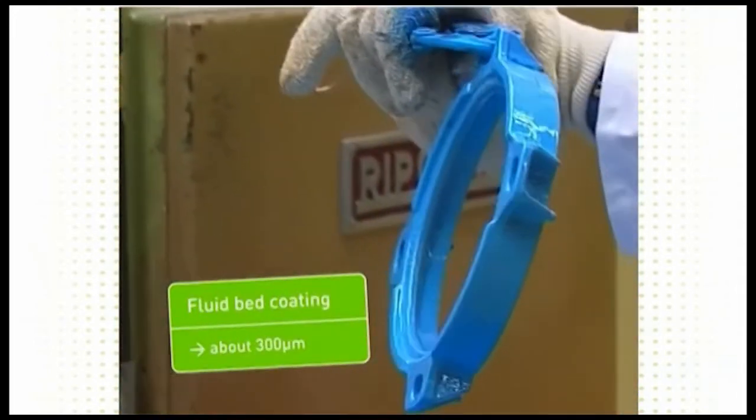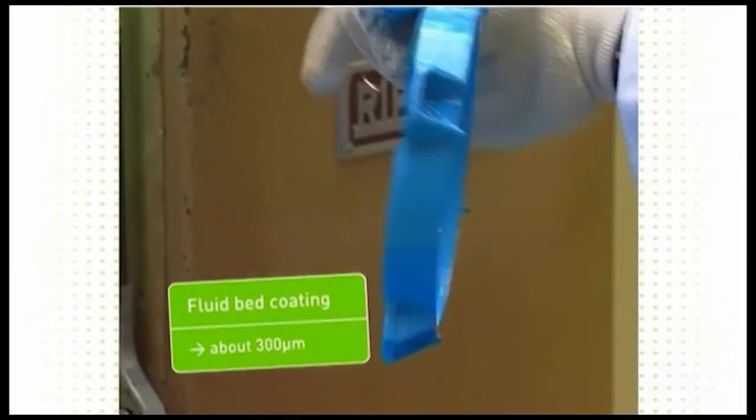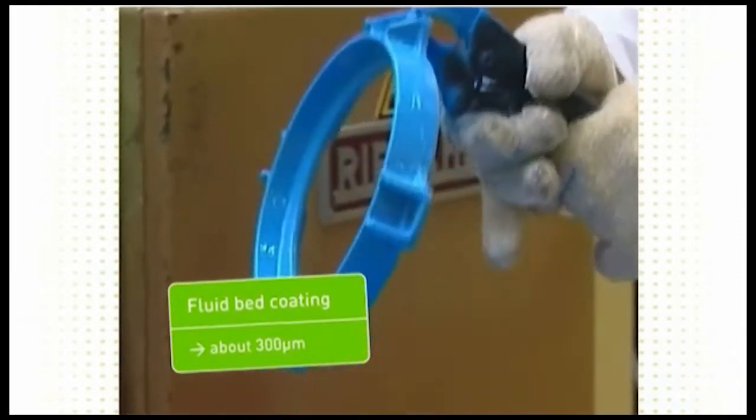With Rilsan Grades for fluid bed coating, a coating thickness of around 300 microns can be achieved.